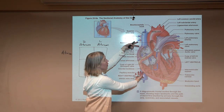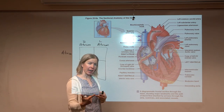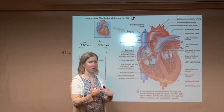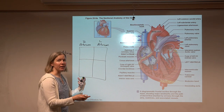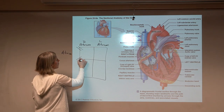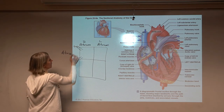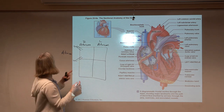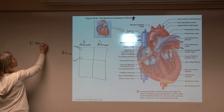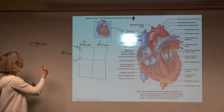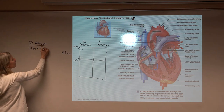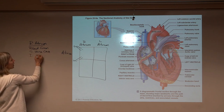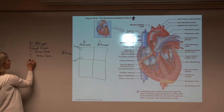In the right atrium we see blood flowing in through the superior and inferior vena cava, and also through the opening of the coronary sinus — this is where blood that actually feeds the heart muscle comes back in. So the right atrium receives blood from the superior vena cava, the inferior vena cava, and the coronary sinus.